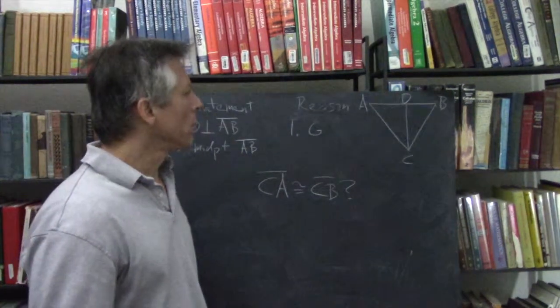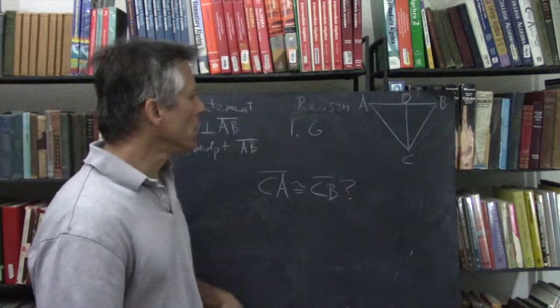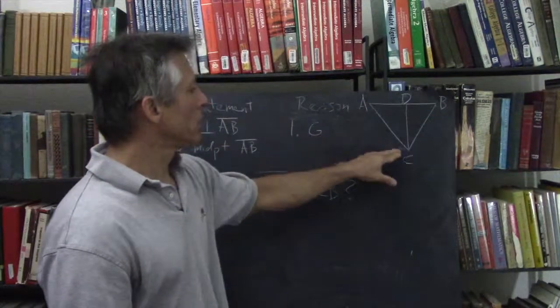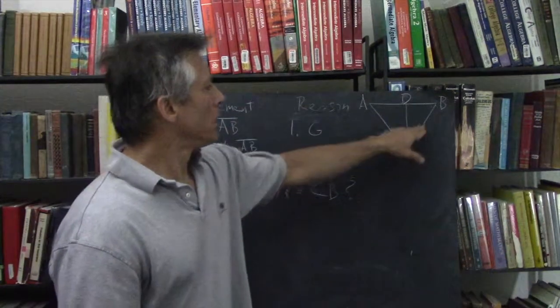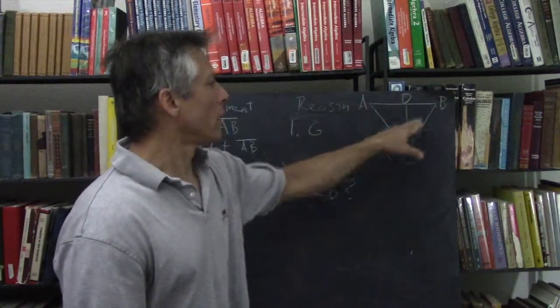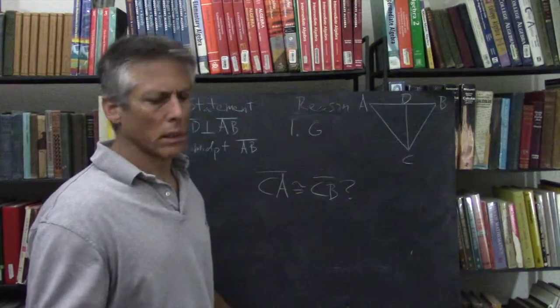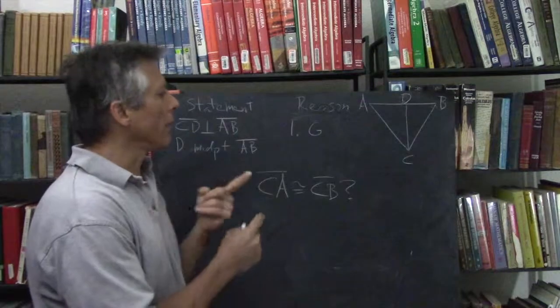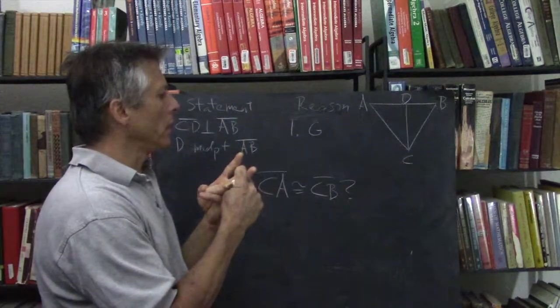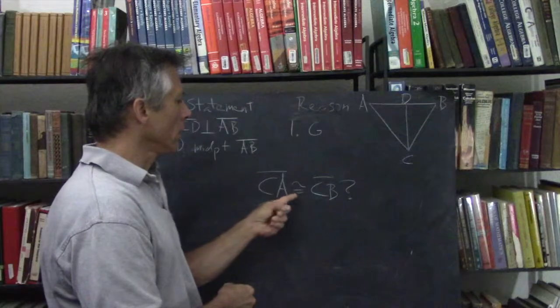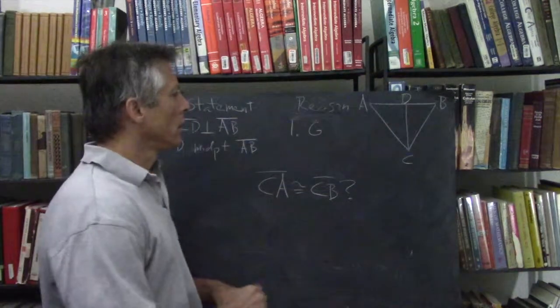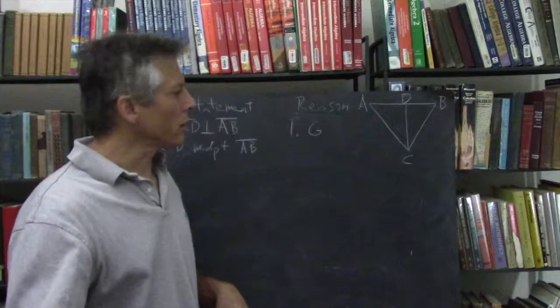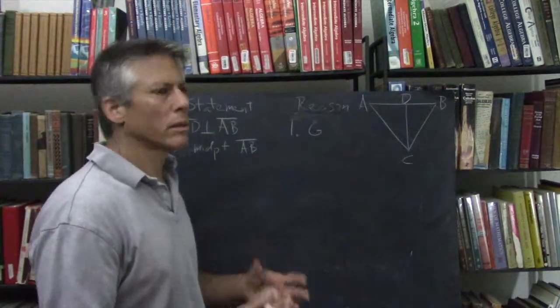So, we're probably going to use a triangle again, because CA is part of this triangle on the left, and CB is part of this triangle on the right, CBD. So, we'll try to show, we'll try to get what we have, show triangles are congruent, and then conclude this. Okay. So, let's turn our focus to the triangles, and try to show they're the same.